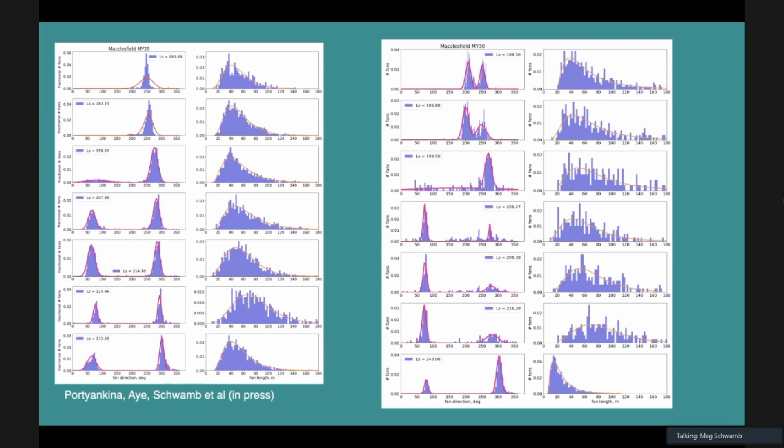One example here is showing a region we've dubbed Macclesfield. We're showing the fan direction here versus the fraction of the total number of fans in the image. The second plot is showing the fan length and that fractional coverage. This is season two and this is season three of those two campaigns.